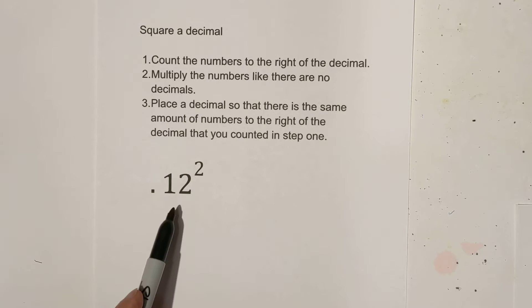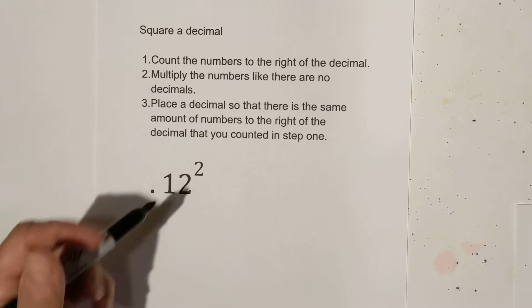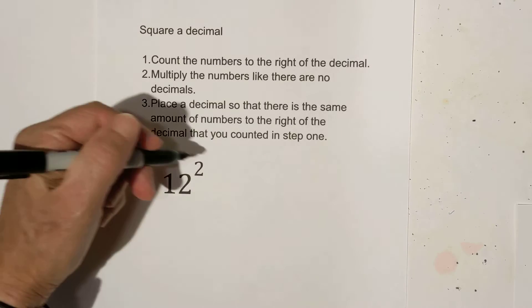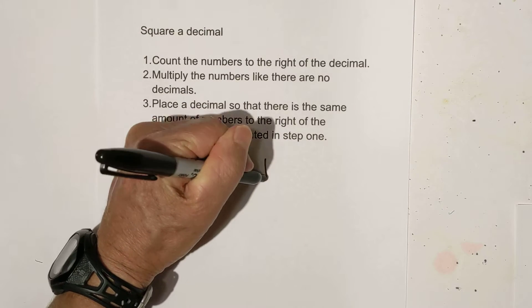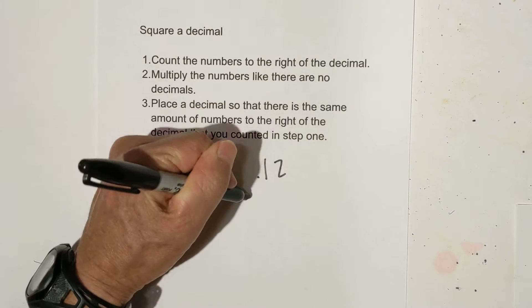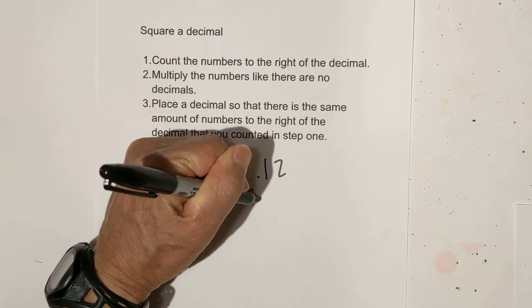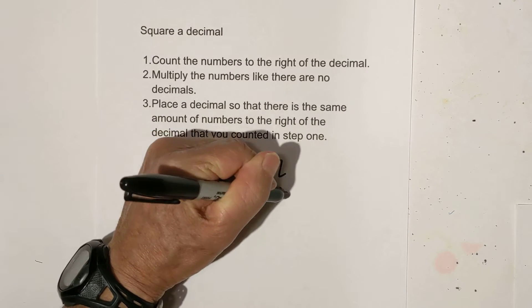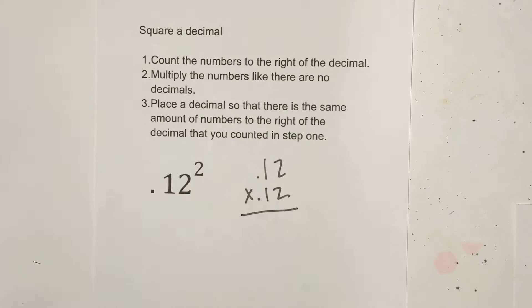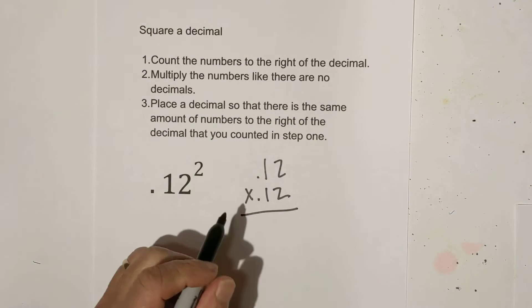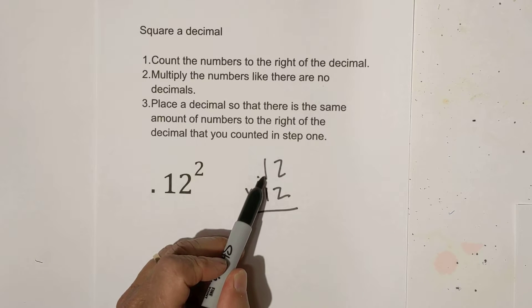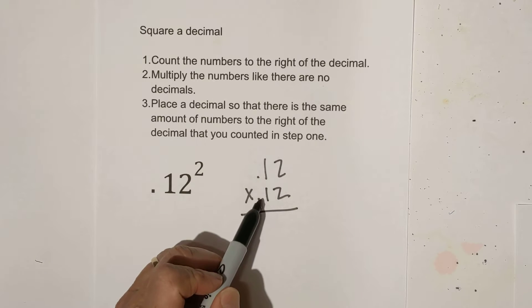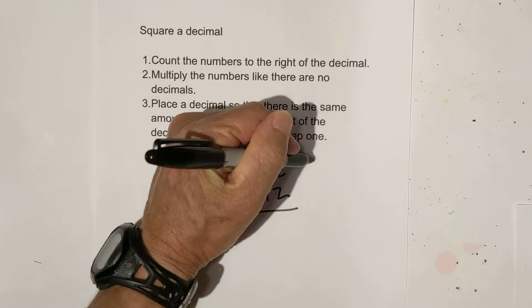So let's get started. We have twelve hundredths squared, and so basically it is twelve hundredths times twelve hundredths. Let's count the number of numbers to the right. So we have one, two, three, four.